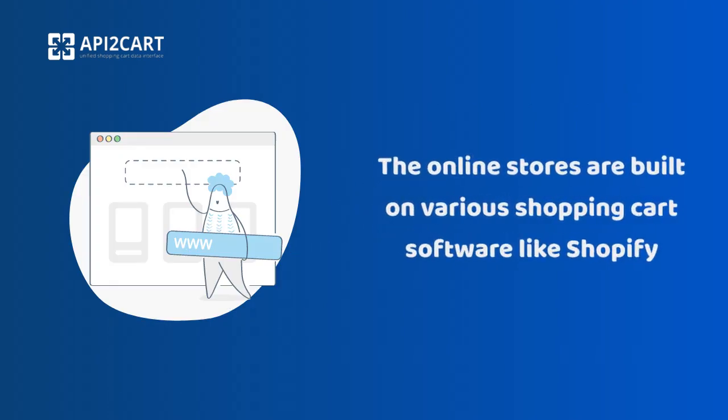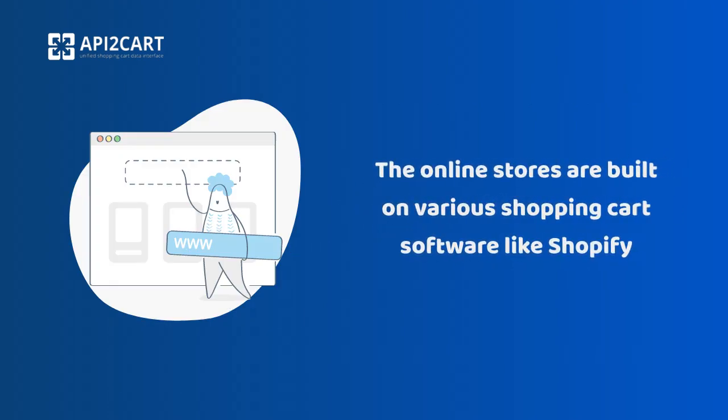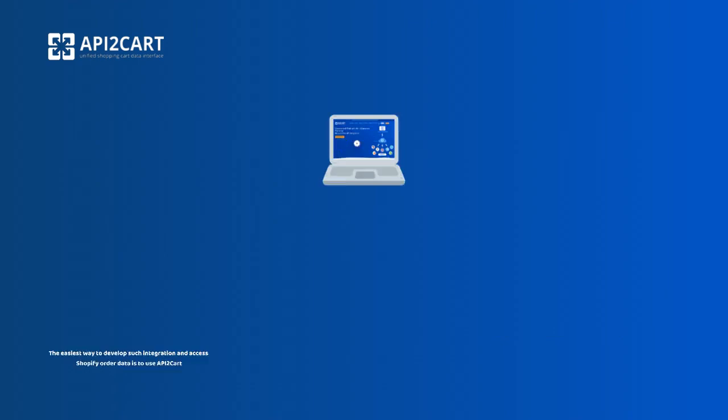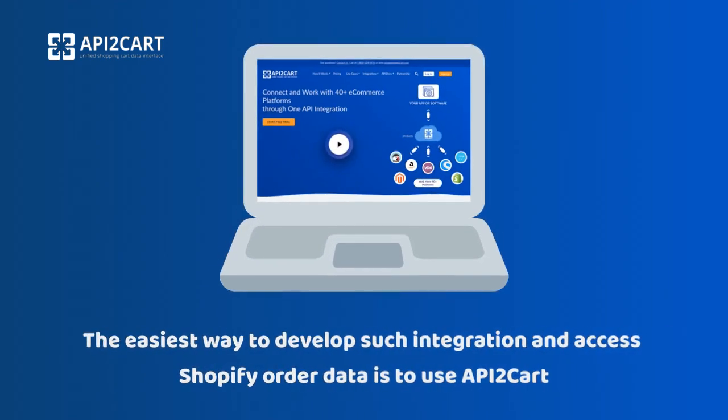The online stores are built on various shopping cart software like Shopify. To get order data from the Shopify stores, the software vendors have to connect their systems to this platform. The easiest way to develop such integration and access Shopify order data is to use API2Cart.